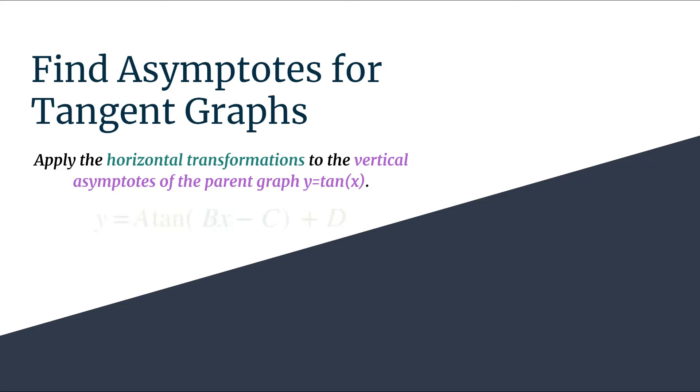So those are the inputs of your general tangent equation, so that's the bx minus c, and then we'll set that equal to pi over 2 plus pi k, the asymptotes of tan x. And after that all you have to do is solve for x.